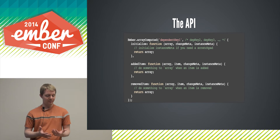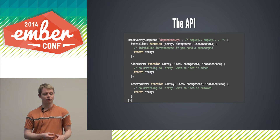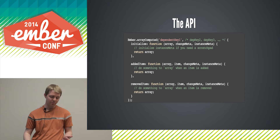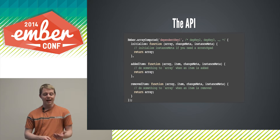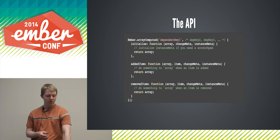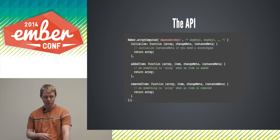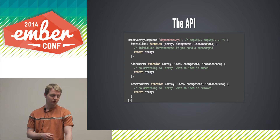Let's look at the API — how you would recreate one of these functions. You use Ember.arrayComputed and it looks a lot like a normal computed property created using Ember.computed. You've got an arbitrary list of dependent keys. Your last argument, instead of being a function, is an object with a few things. It has two required functions: addedItem and removedItem — what to do when an item is added and what to do when an item is removed. And optionally, a function for initializing the array computed.